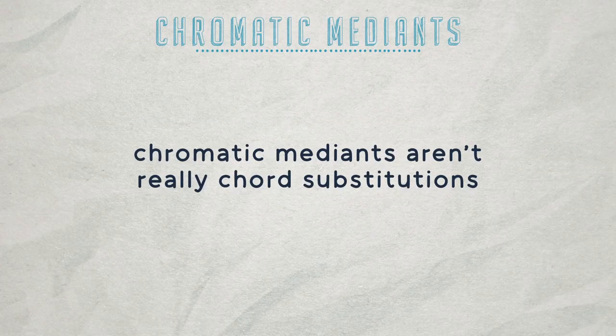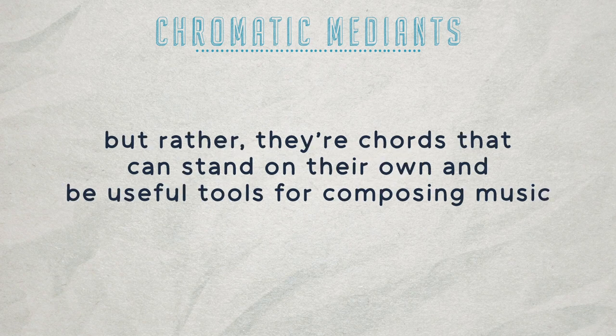How do we use these in our music? I'm a big advocate for experimentation. My recommendation would be whenever you're writing a chord progression, try using chromatic medians and see what kind of sounds you can get. Over time, you'll get used to how each chord sounds and you'll be able to use them more efficiently. These aren't really chord substitutions, but rather chords that can stand on their own and be useful tools for composing music. Here's an example I wrote that uses some chromatic medians so you can see how they sound in an original piece.